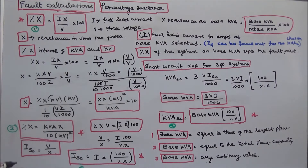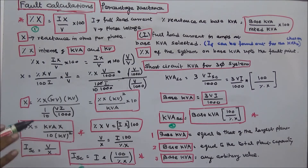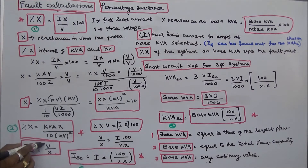The short circuit current is equal to V divided by X. In the circuit, resistance R is very small and we neglect it. Therefore, the short circuit current ISC equals V divided by X.